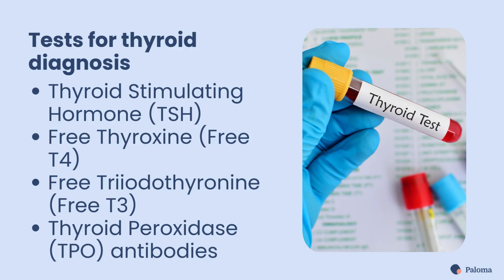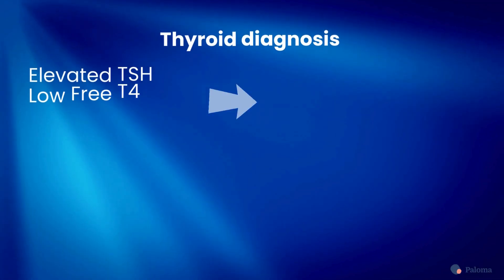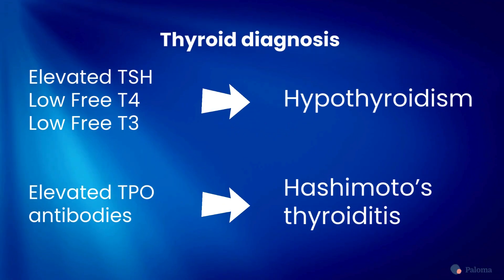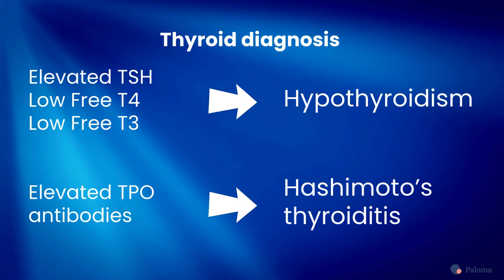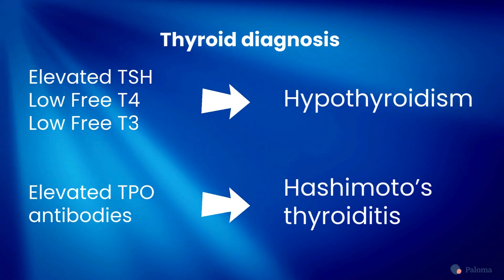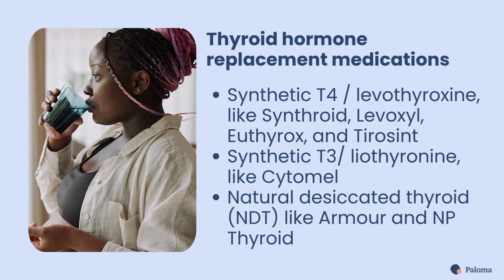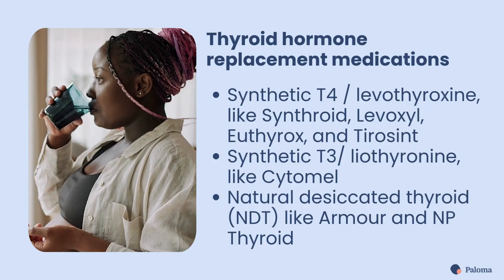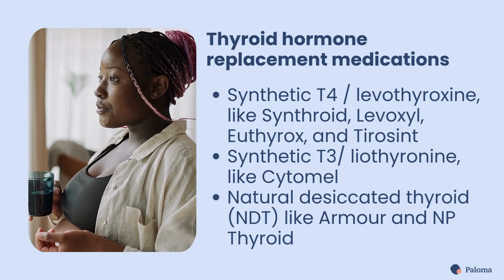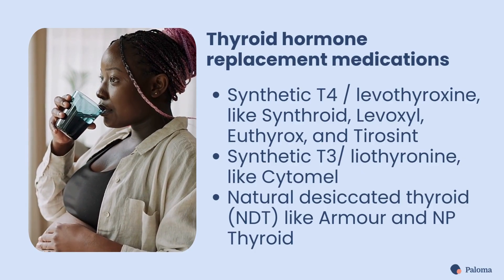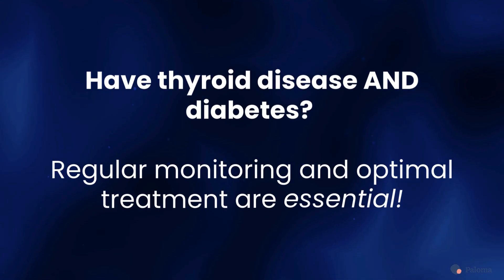Thyroid disease is typically diagnosed with a panel of four key tests: thyroid-stimulating hormone (TSH), free thyroxine (free T4), free triiodothyronine (free T3), and thyroid peroxidase antibodies (TPO). Elevated TSH with low free T4 and low free T3 are consistent with hypothyroidism. Hashimoto's thyroiditis may be diagnosed when you have elevated TPO antibodies. The treatment for hypothyroidism is thyroid hormone replacement medication. Hypothyroid patients are treated with the synthetic T4 drug levothyroxine — like Synthroid, Levoxyl, Euthyrox, and Tirosint — the synthetic T3 drug liothyronine like Cytomel, and natural desiccated thyroid.